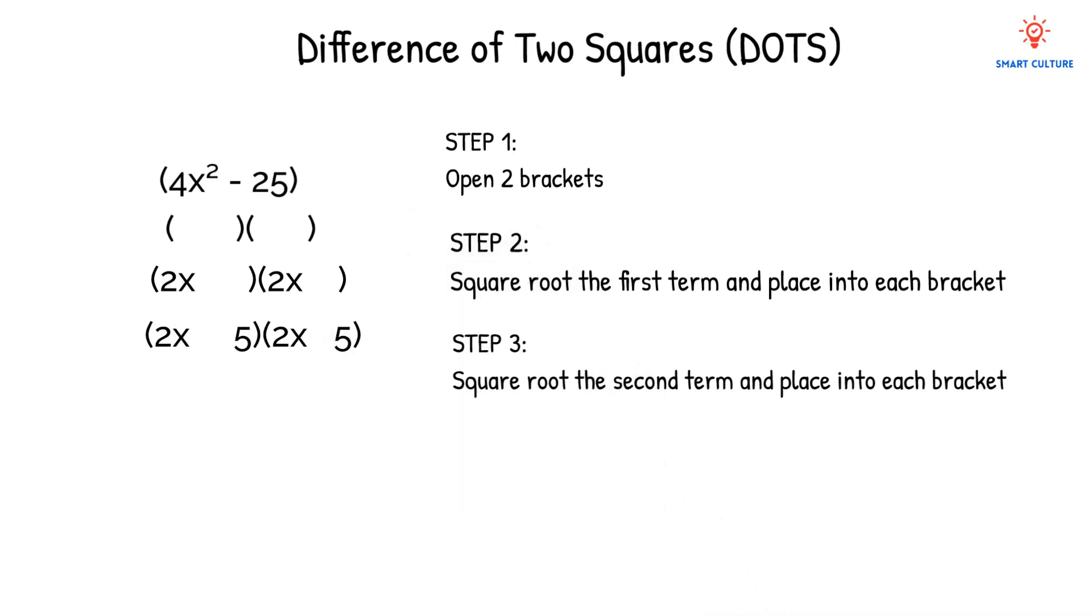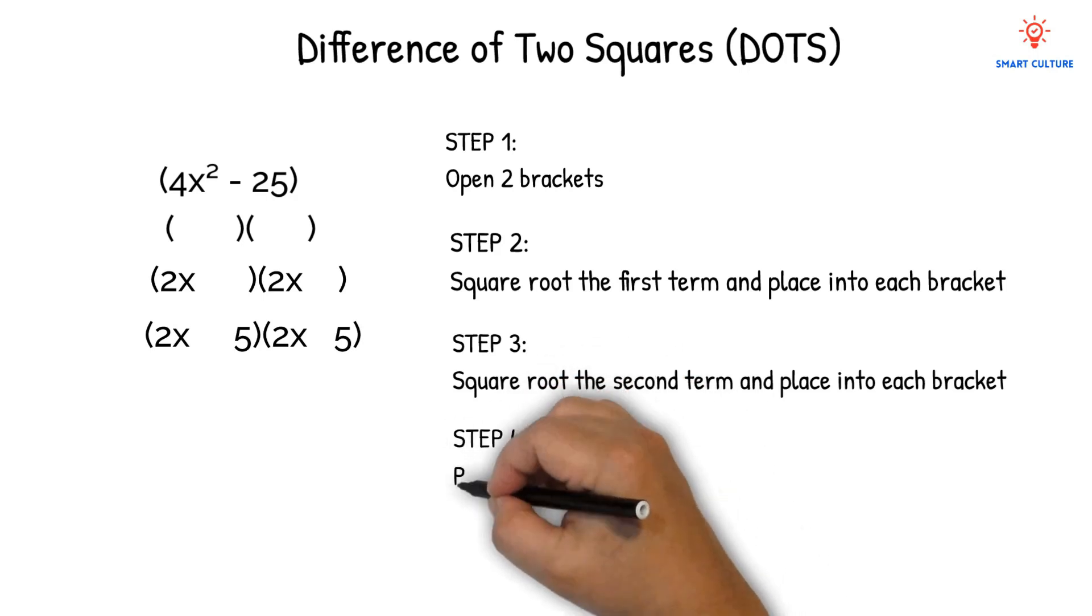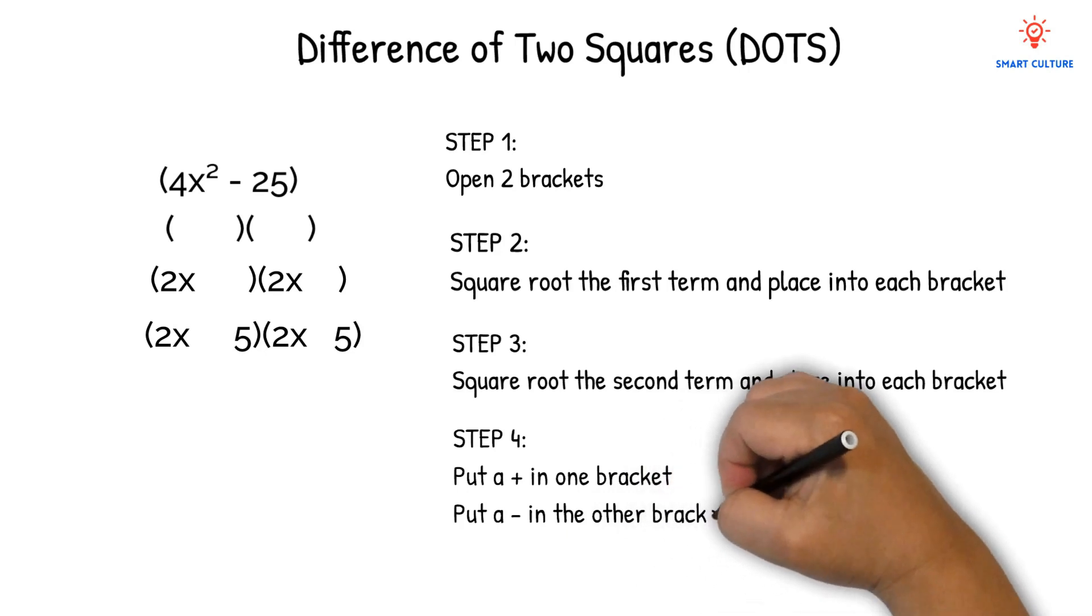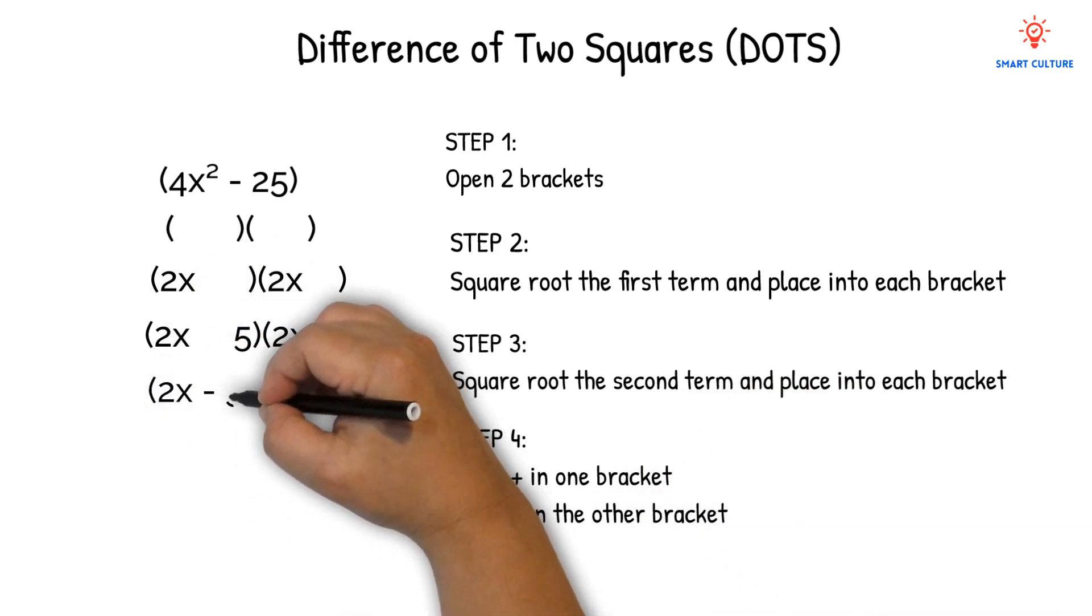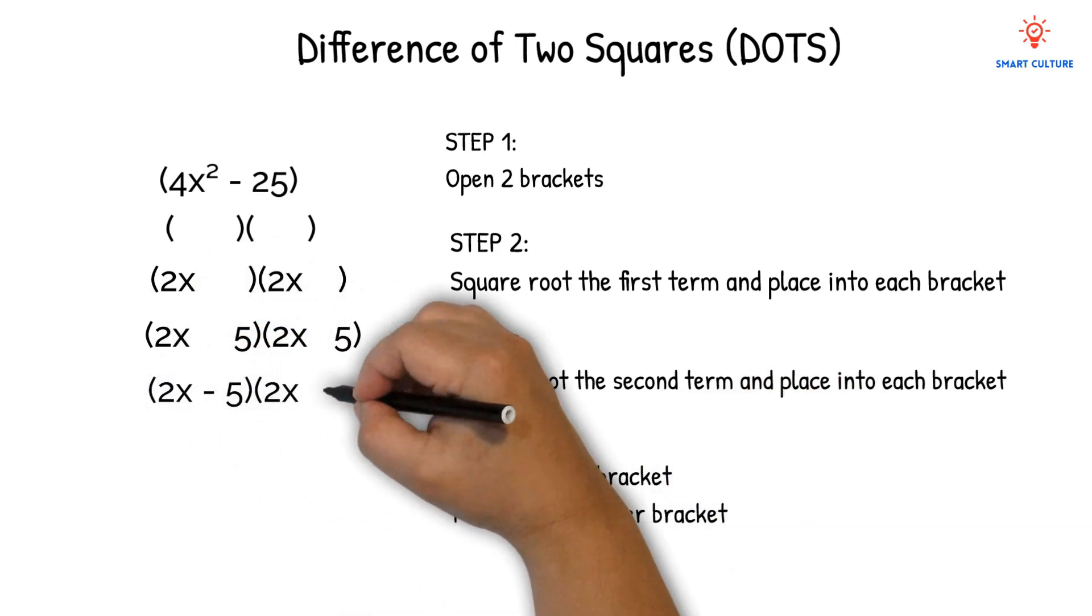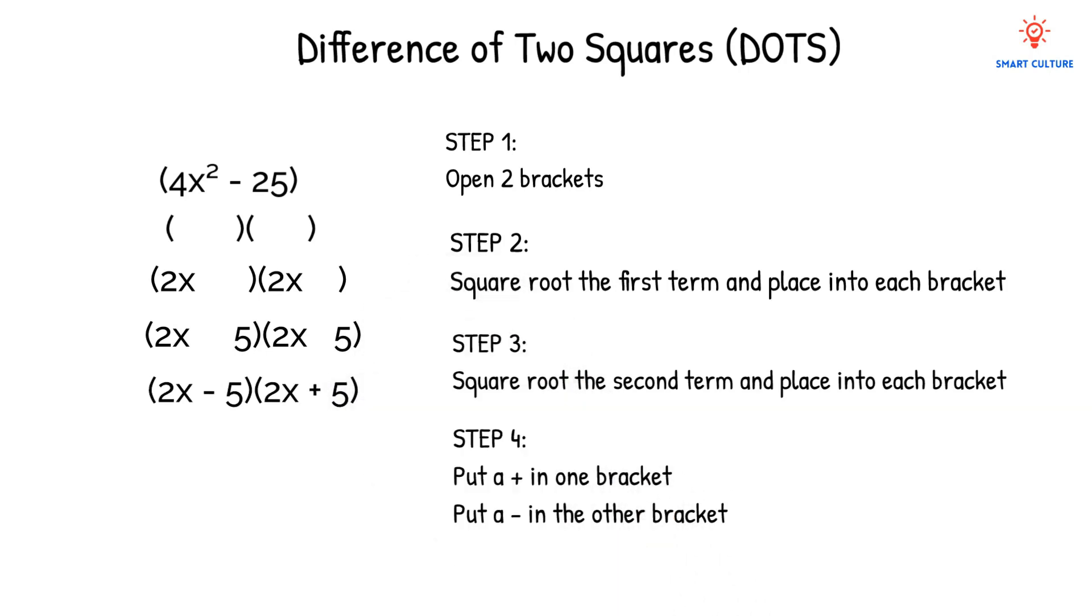Where we will put a positive in one bracket and a negative in the other bracket. This gives us, in brackets, 2x minus 5 and in another bracket, 2x plus 5.